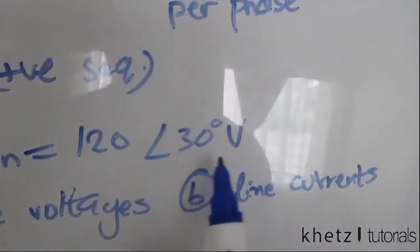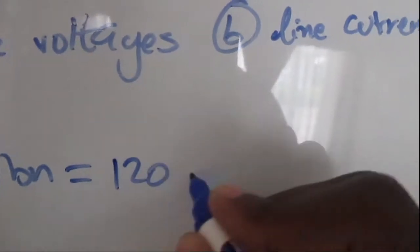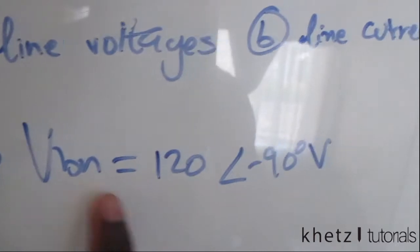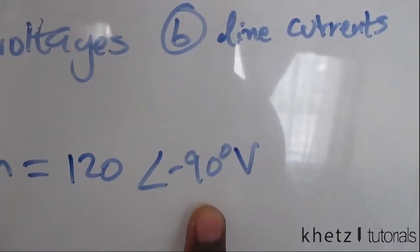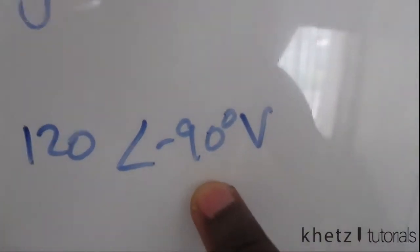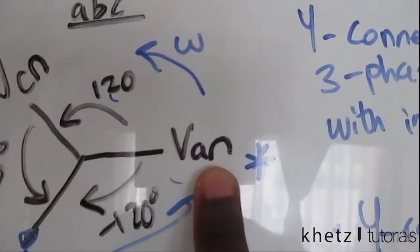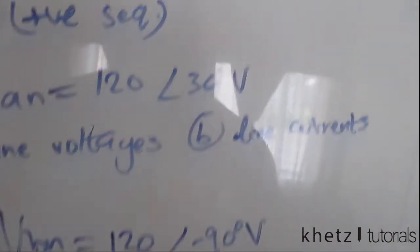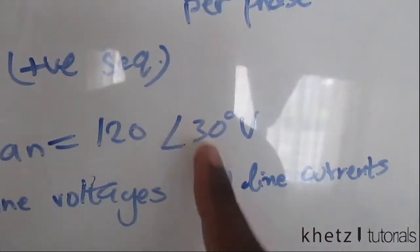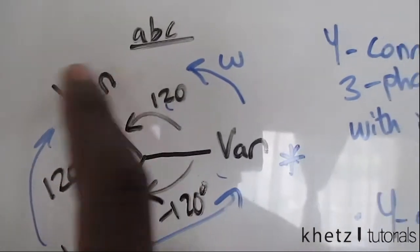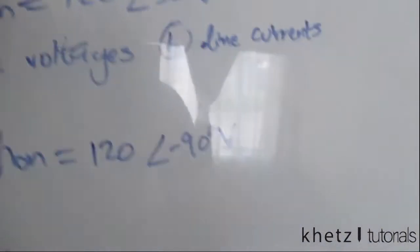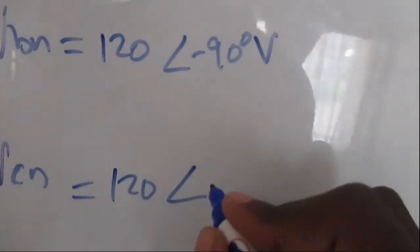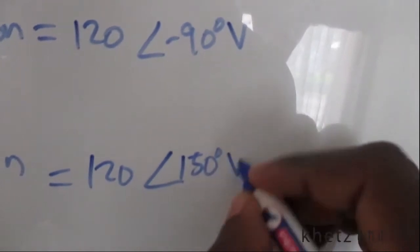V_AN has an angle of 30 degrees, so V_BN is going to be 120 at negative 90 degrees. From here you subtract a further 120 degrees, or you add 120 degrees to V_AN to find V_CN. So adding 120 degrees to 30 gives us 150 degrees for V_CN.